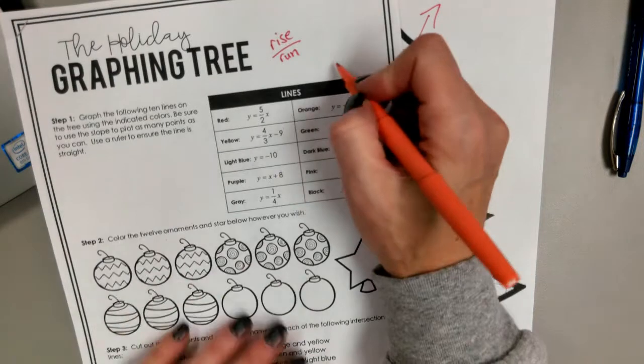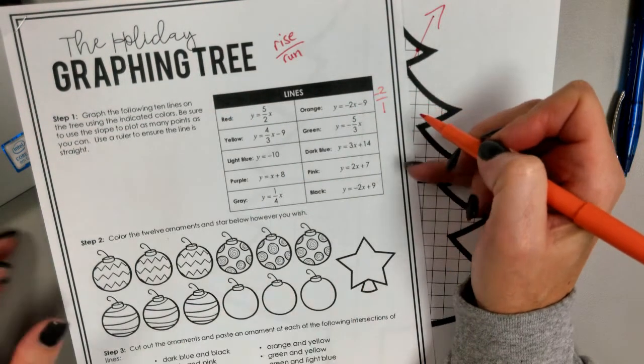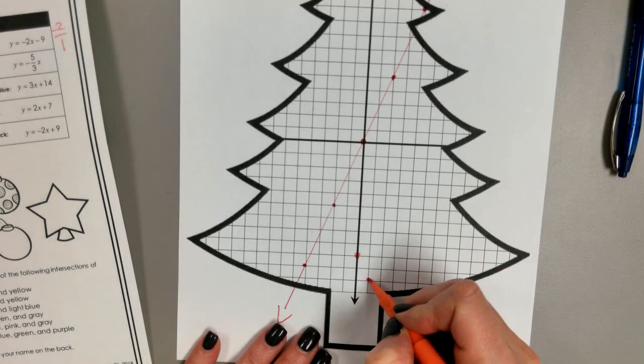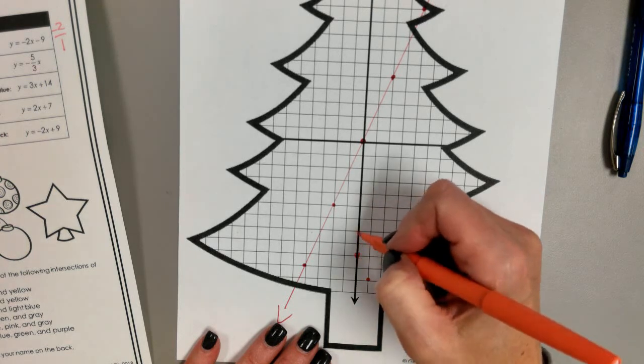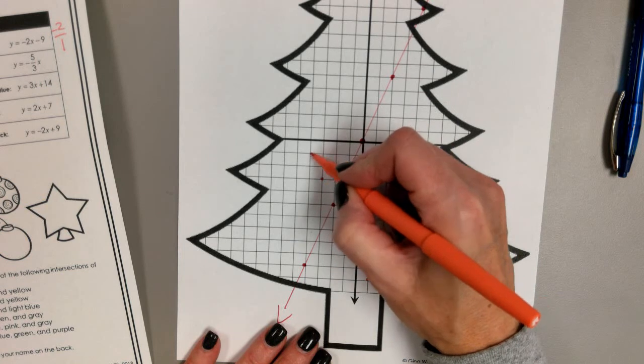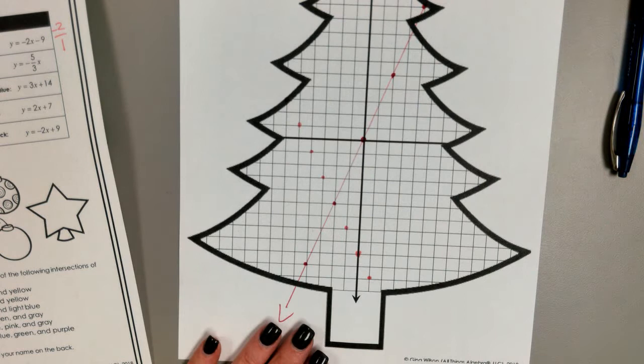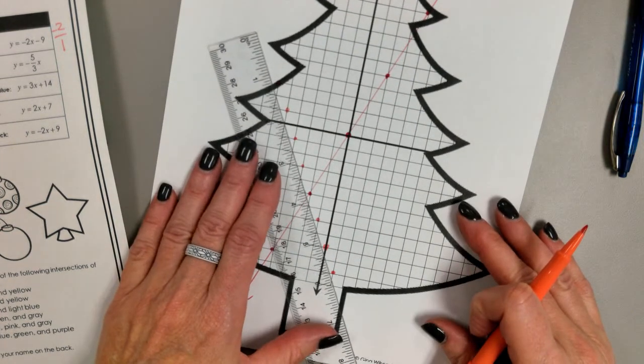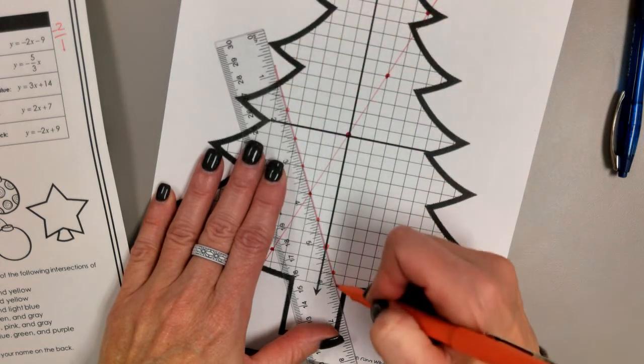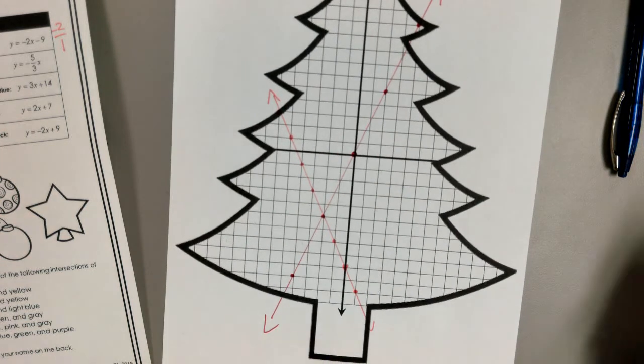And we have negative two x, so that means that's negative two over one. So we're going to go down two and over one. Down two, over one. And I don't have any more room really to go here, so I'm going to go up and to the left just so I get a good accurate line. So there's my orange line.